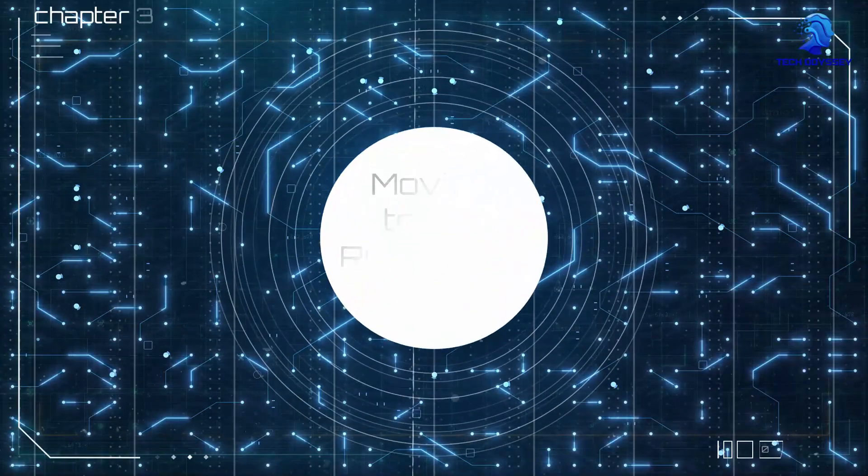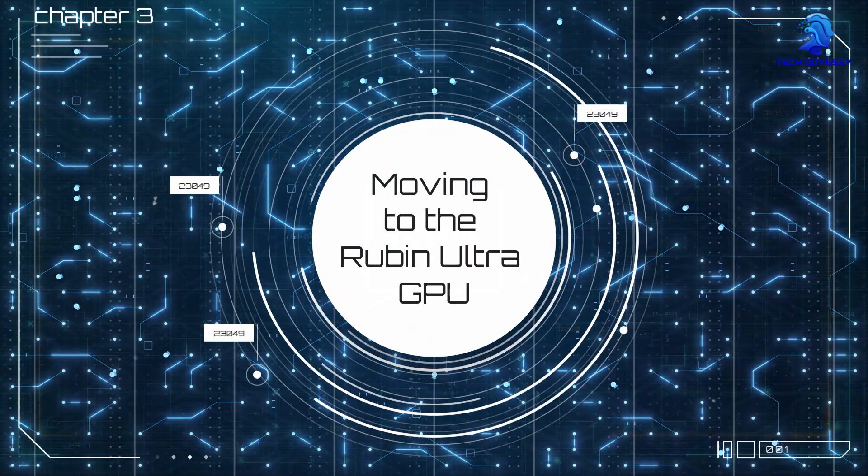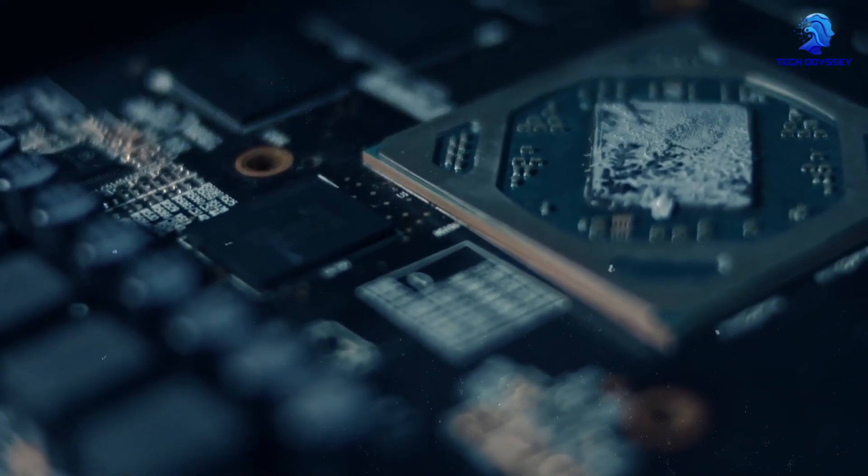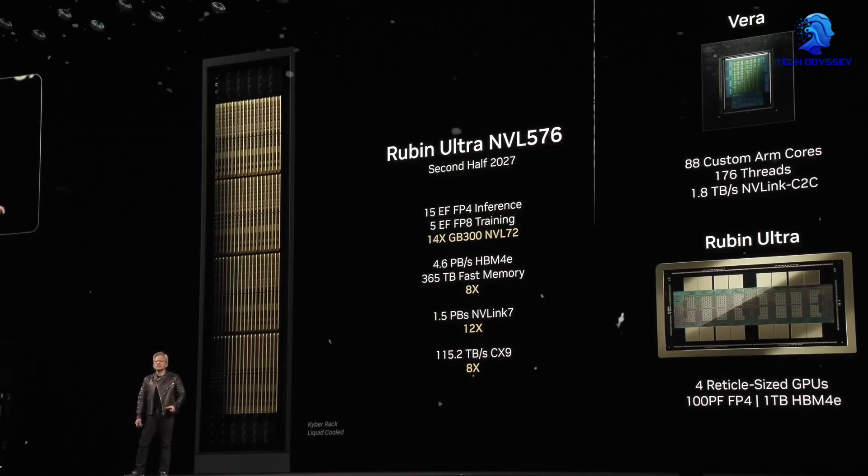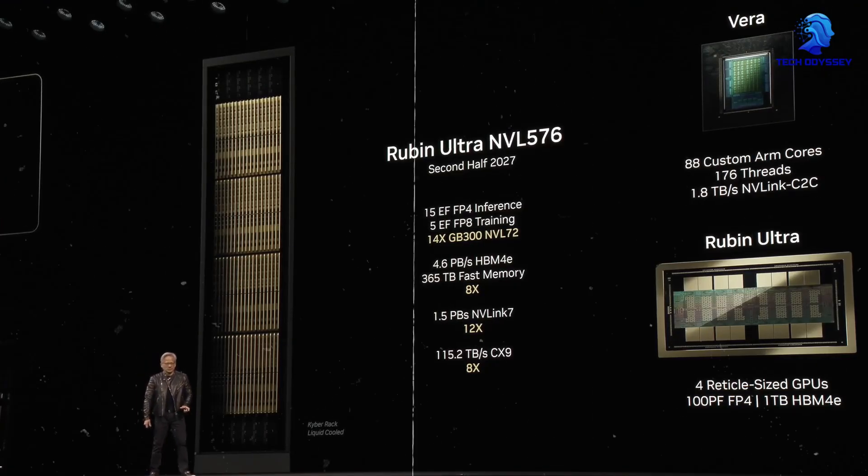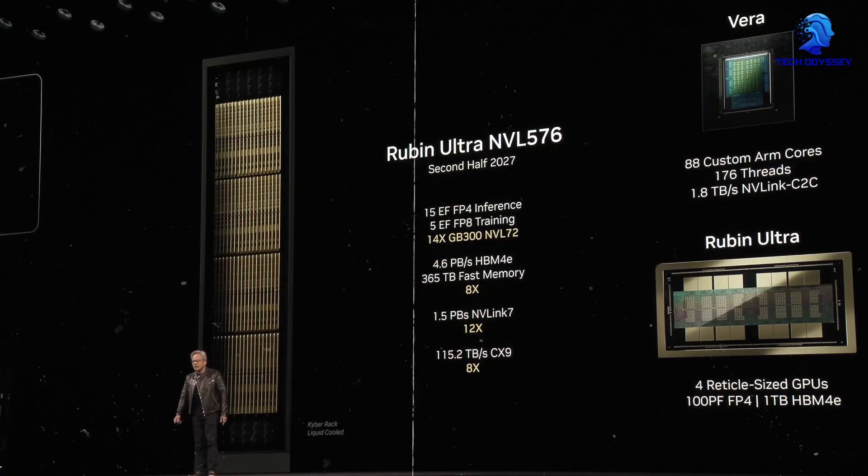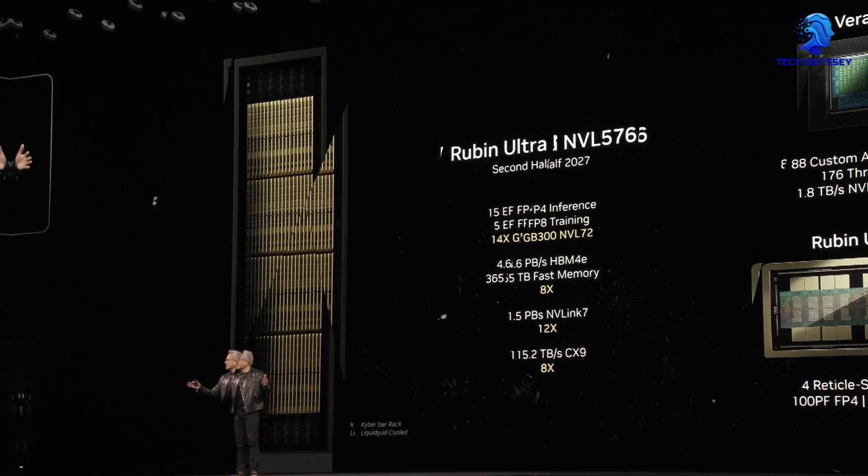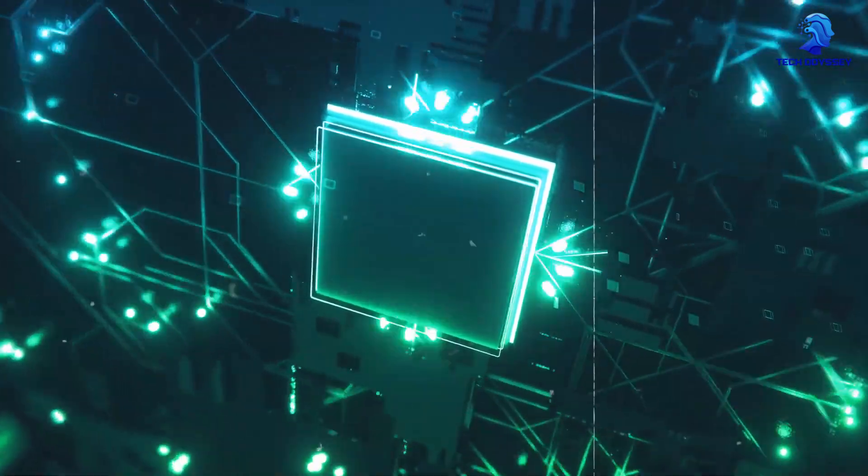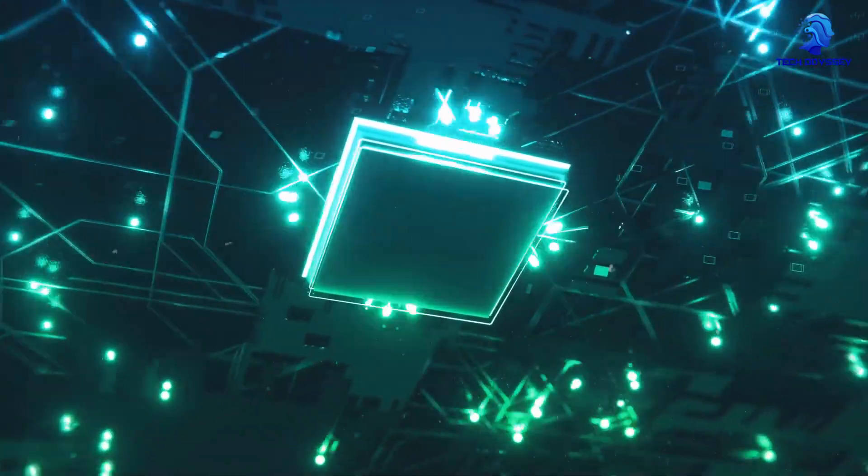Chapter 3: Moving to the Rubin Ultra GPU. Building on the foundation laid by the Vera Rubin GPU, the Rubin Ultra GPU takes computational power to new heights. Launching in 2027, this chip features 4 massive processing dies per GPU, delivering 100 PFLOPs FP4 inference performance per chip.